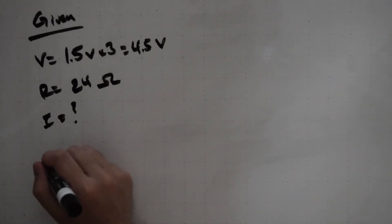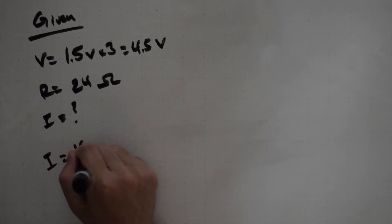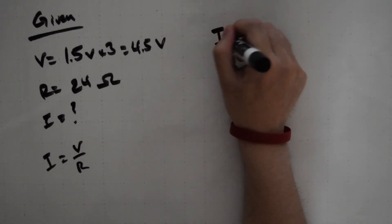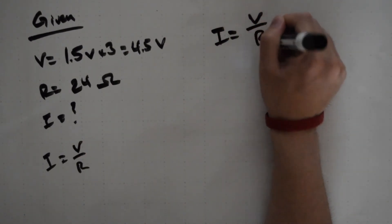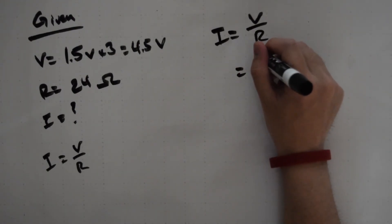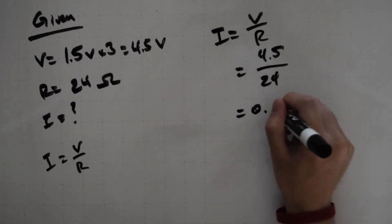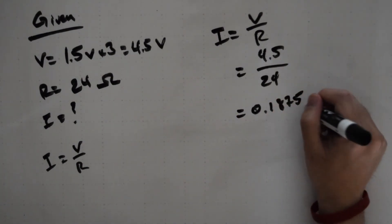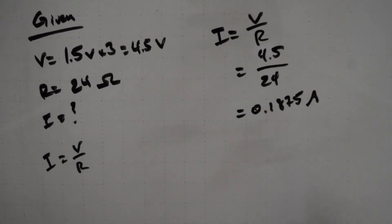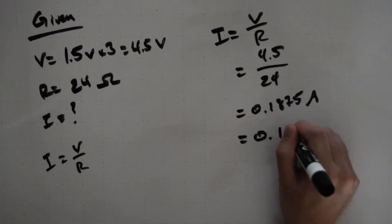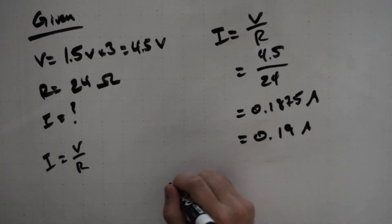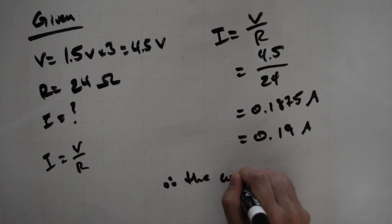If you remember from our previous question, the equation for current is going to be V over R. We can now rewrite our equation and plug in all of our givens. This leaves us with 0.1875 amps. We're going to round that off to 0.19 amps. And our therefore statement is going to read, therefore the current is 0.19 amps.